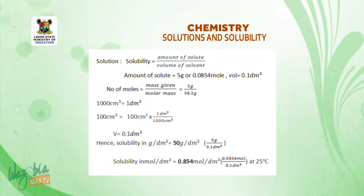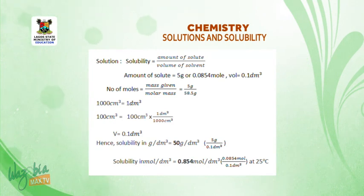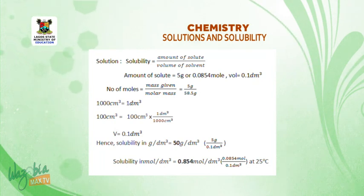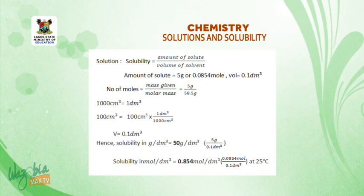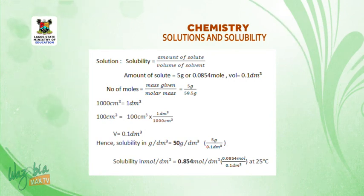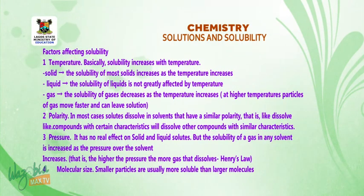Solution: solubility equals amount of solute over volume of solvent. Amount of solute = 5 g. Volume = 100 cm³, converted to dm³: since 1000 cm³ = 1 dm³, then 100 cm³ = 0.1 dm³. Therefore, solubility in grams per dm³ = 5 g ÷ 0.1 dm³ = 50 g/dm³. Solubility in moles per dm³ = 0.854 mol/dm³.